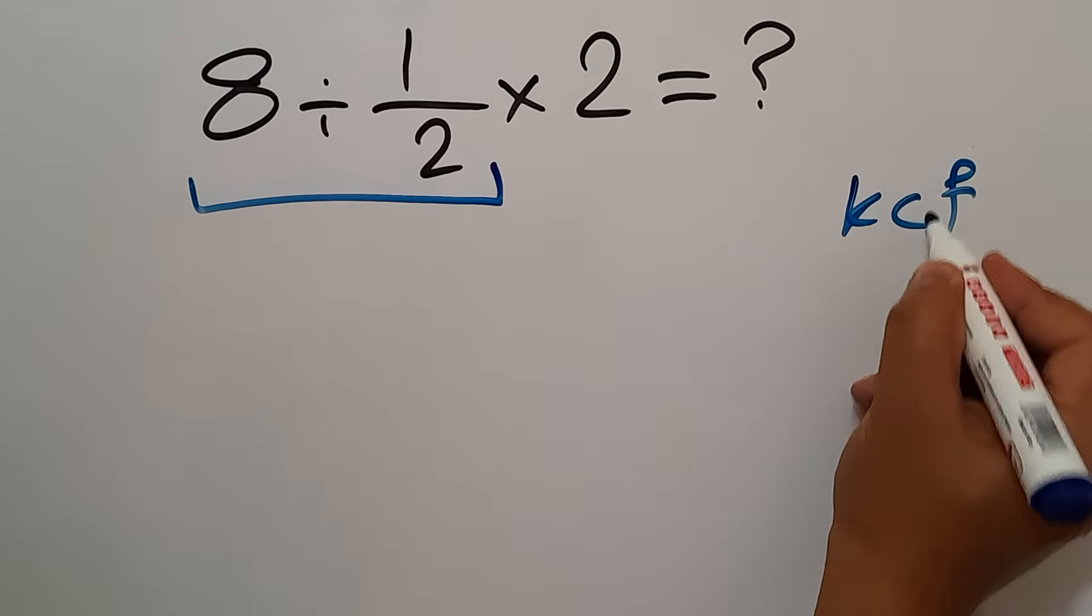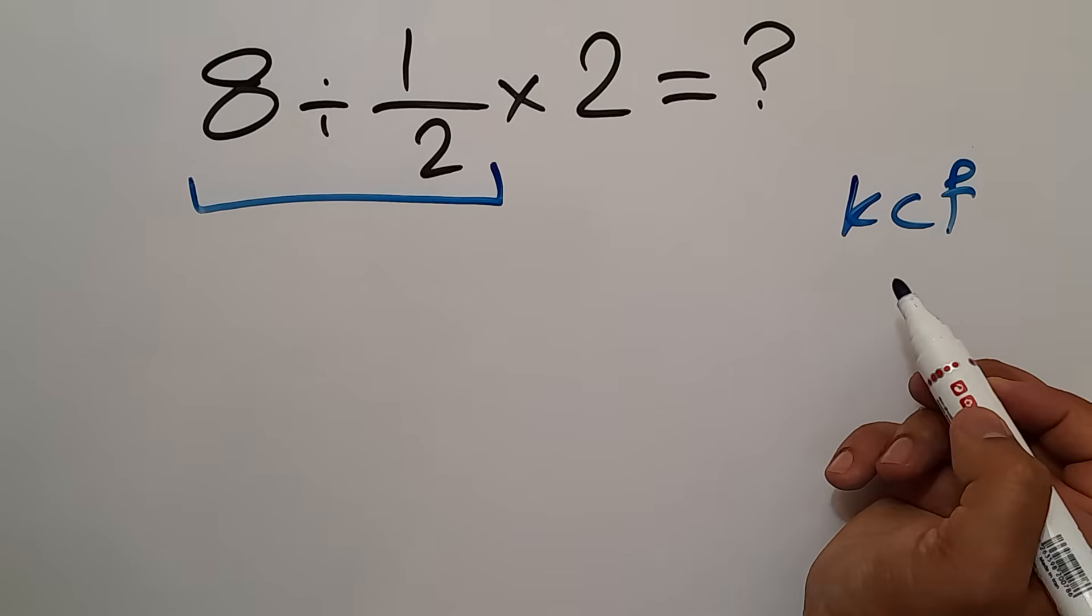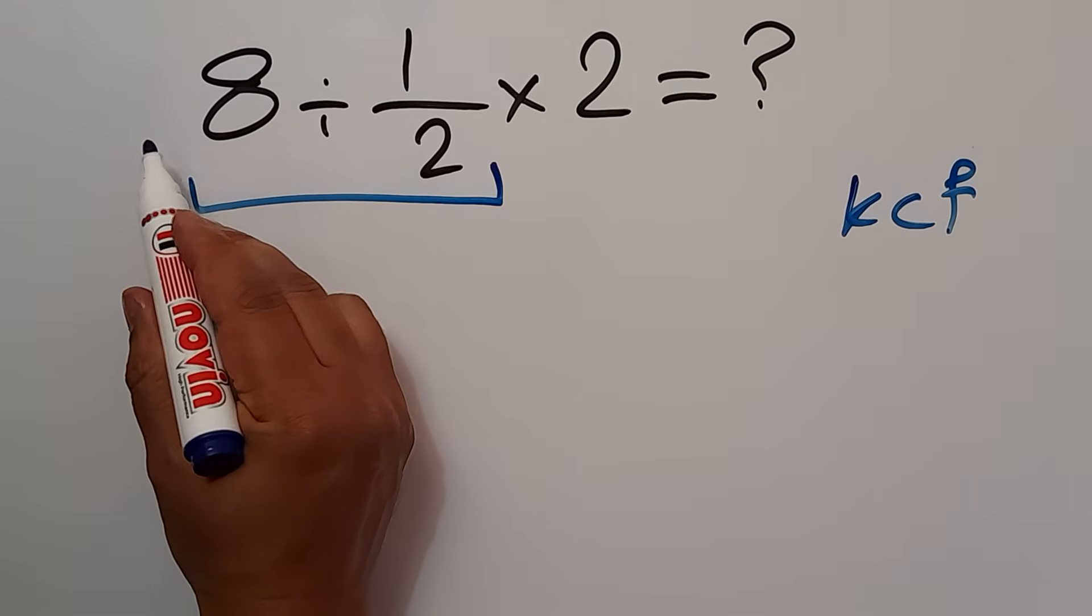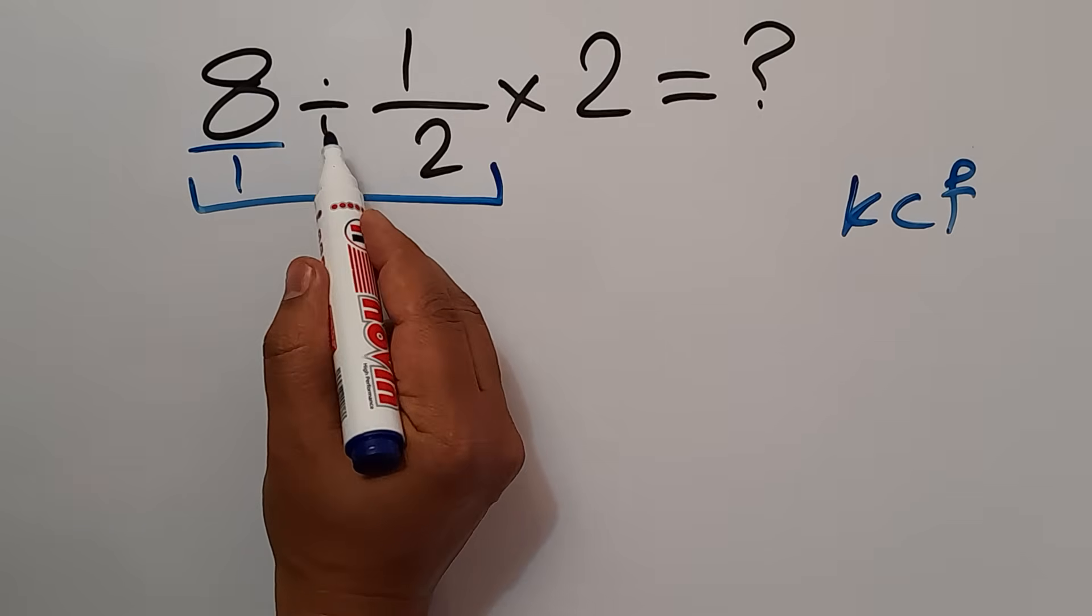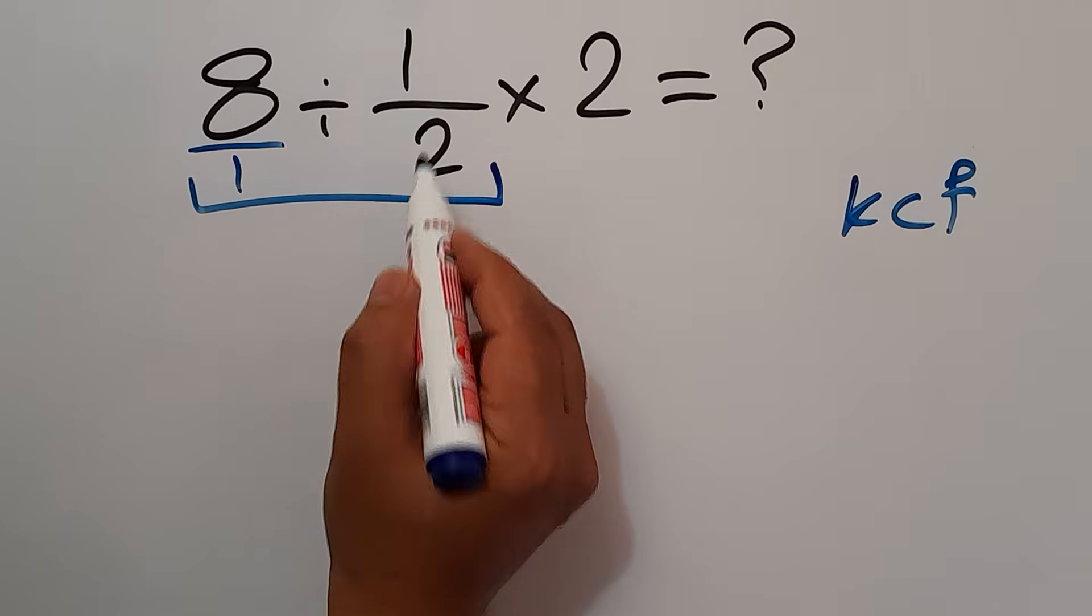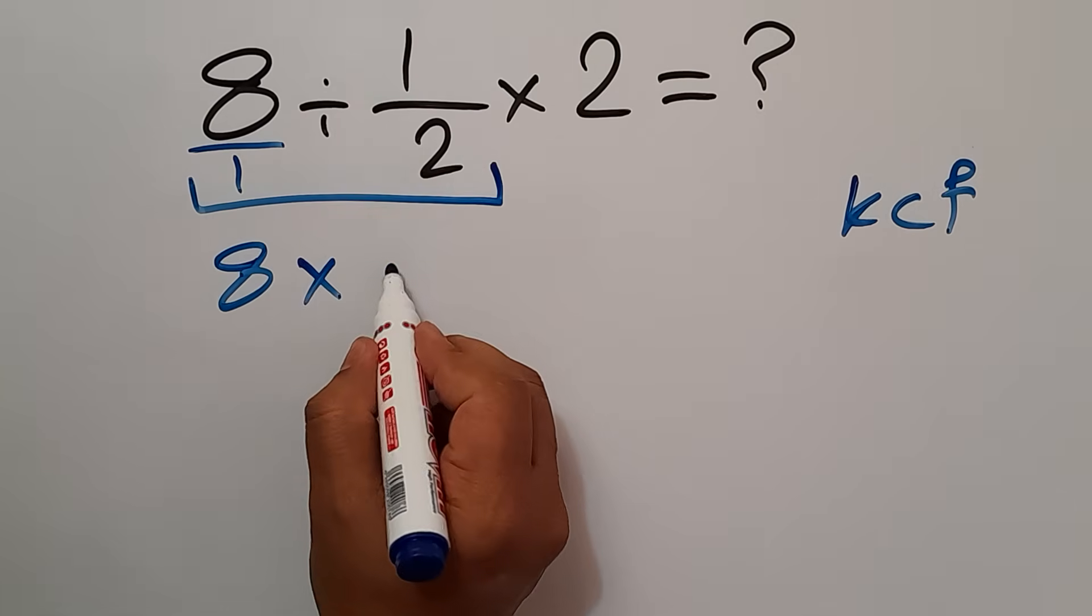KCF rule: K stands for keep, C stands for change, and F stands for flip. Keep the first fraction which is 8 over 1, change division to multiplication, and flip the second fraction. So we can write 8 times 2,